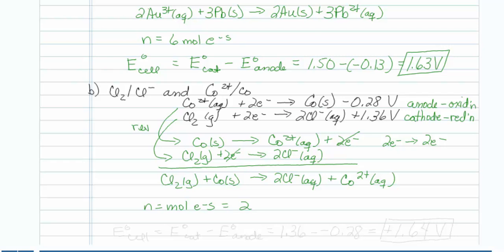The standard state cell potential equals the standard state cathode potential minus the standard state anode potential, so that is 1.36 minus negative 0.28, which equals positive 1.64 volts.